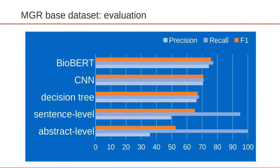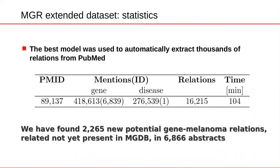The next step consisted in taking the best model from the previous experiment — that is, BioBERT fine-tuned on the MGR dataset — and applying it to a larger set of PubMed articles. We started with a fairly broad PubMed query, which retrieved about 89,000 PubMed abstracts, and after applying our fully automated model, we detected 2,265 potential new genes related to melanoma, with evidence from 6,866 abstracts.